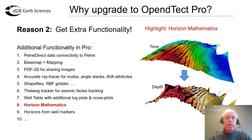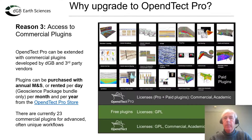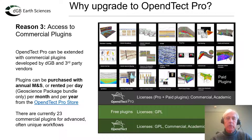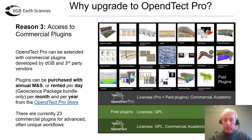You also have the option to do math on horizons. For example, if you want a quick time-depth conversion on a horizon, this is the functionality to use. Another reason to upgrade to OpenDetect Pro is that you get access to numerous plugins — developed by DGB but also by other companies. These plugins can be purchased or rented on a daily basis (for the geoscience package), or on a monthly or yearly basis, directly from the OpenDetect Pro store. At the moment we have 23 commercial plugins offering very advanced and sometimes unique functionality.